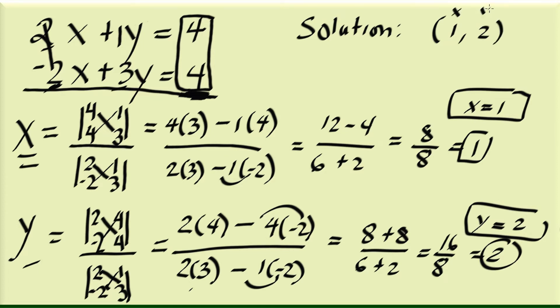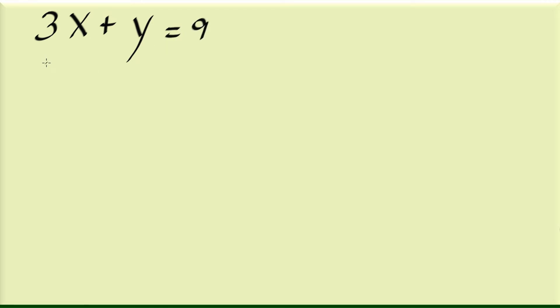So that's how you do it using Cramer's rule. Let's do one more example. Say we have this system of equations: 3x plus y is equal to 9, and 2x minus y is equal to 1.